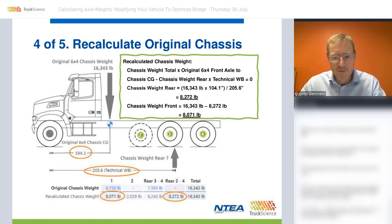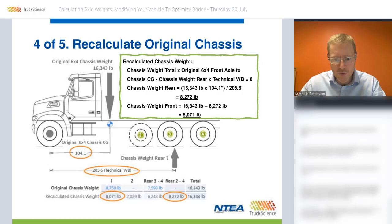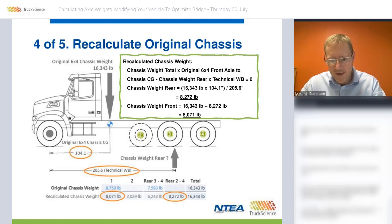That is this calculation here. When we normalize that formula, we get to the recalculated front and rear chassis weights — in this case, 8,071 pounds in the front and 8,200 on the rear. But the overall chassis weight is exactly the same — it's just that the distribution over the front and all the rear axles is different.